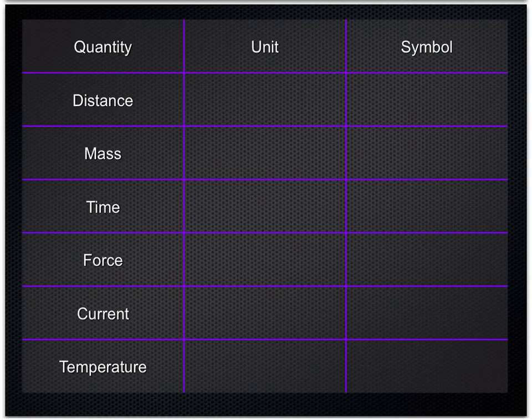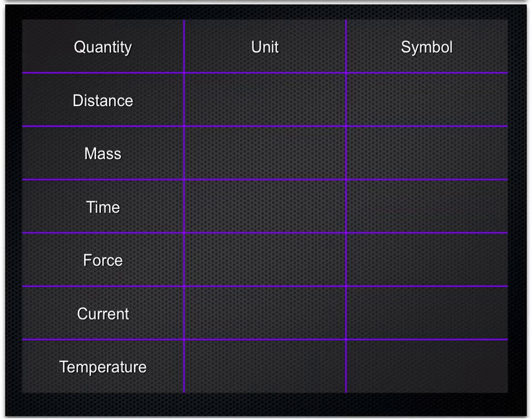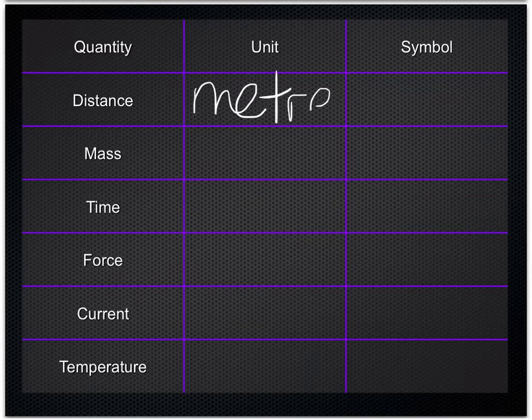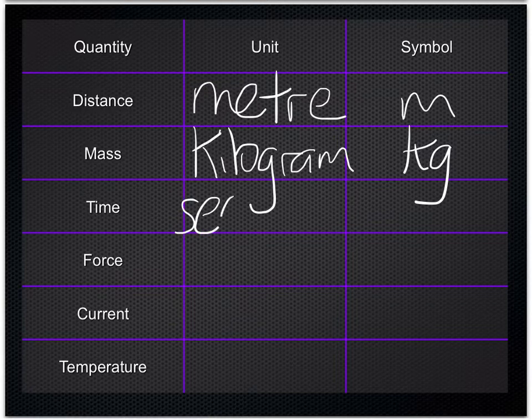Here are some other units that you'll need to remember and be able to use correctly. Distance, measured in meters, and the symbol is m. Mass, measured in kilograms, and the symbol is kg. Time, measured in seconds, and the unit is small s.